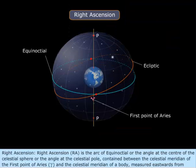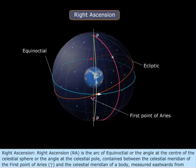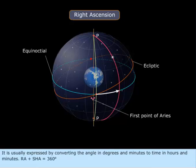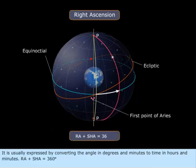Right Ascension. Right Ascension, or RA, is the arc of the equinoctial, or the angle at the center of the celestial sphere, or the angle at the celestial pole, contained between the celestial meridian of the first point of Aries (or gamma) and the celestial meridian of a body, measured eastwards from the celestial meridian of the first point of Aries. It is usually expressed by converting the angle in degrees and minutes to time in hours and minutes. RA plus SHA equals 360 degrees.